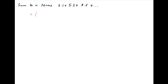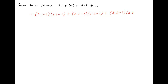The given series can be written as (3×1−1)(2×1−1) plus (3×2−1)(2×2−1) plus (3×3−1)(2×3−1) plus and so on.